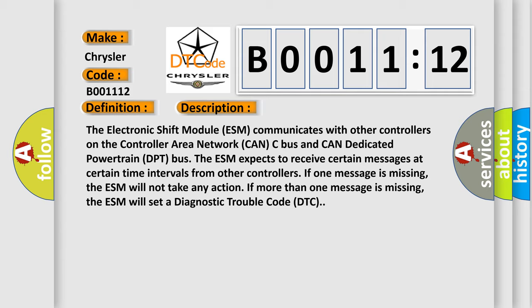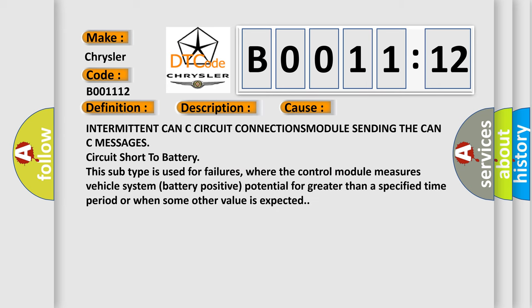This diagnostic error occurs most often in these cases: Intermittent CAN-C circuit connections module sending the CAN-C messages. Circuit short to battery. This subtype is used for failures where the control module measures vehicle system battery positive potential for greater than a specified time period or when some other value is expected. The Airbag Reset website aims to provide information in 52 languages.